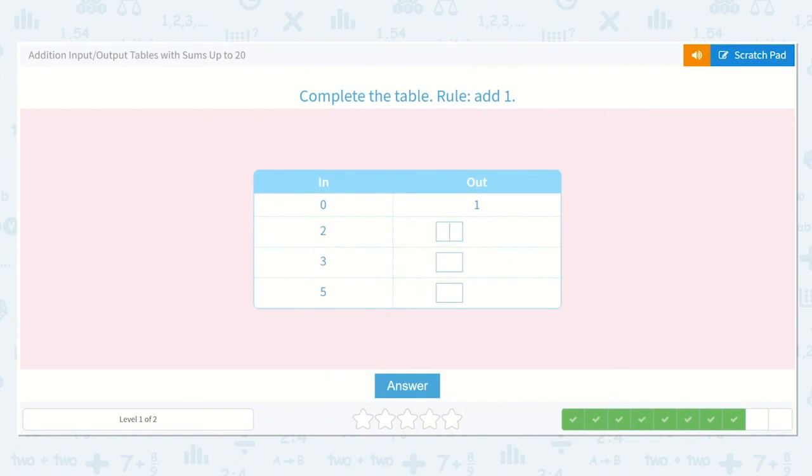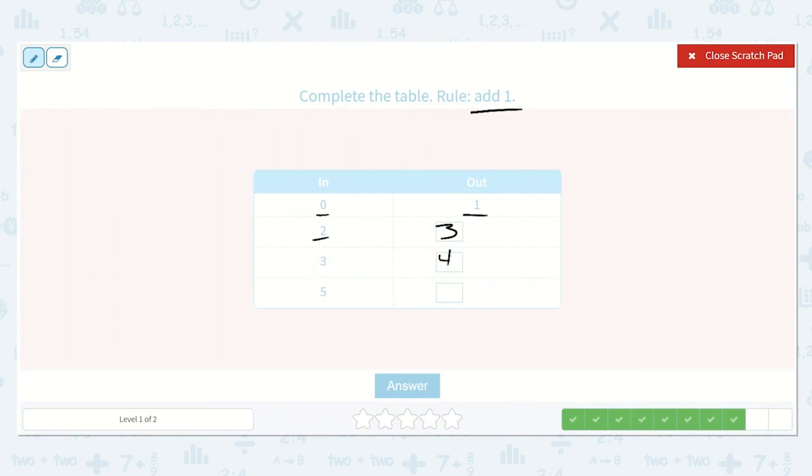Okay, we are adding one. So it is the next number. So zero, one, two, three, three, four, five, six. See how we just counted up by one? Because we are only adding one every time.